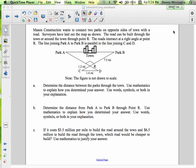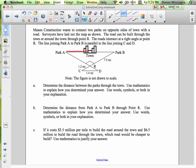And surveyors have laid out the map as shown and there's two choices for the road. So number one is to build the road through the town and number two is to build the road around the town through point R. The roads intersect at a right angle at point R.